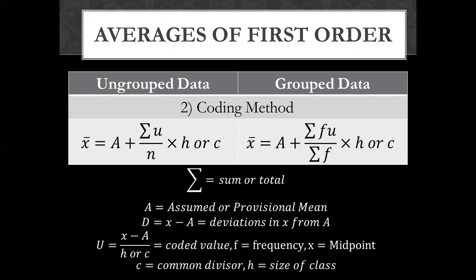C is the common divisor of the class interval. Sometimes values have no difference, and if we apply the coding method we can find a common divisor — a single number which can divide all the data. For grouped data, the coding method formula is: x-bar equals A plus summation fu over summation f, multiplied by H or C.